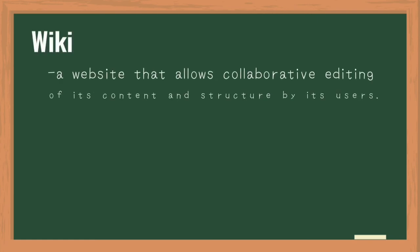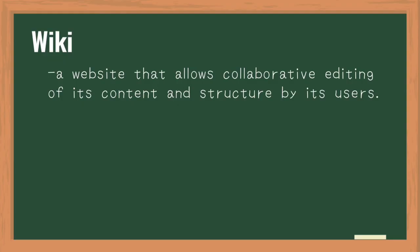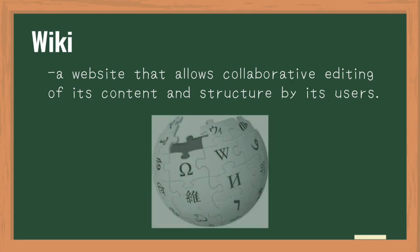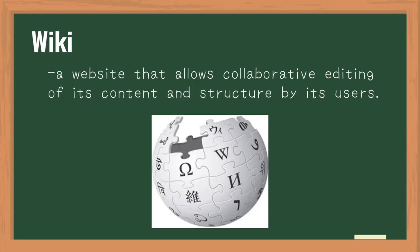A wiki is a website that allows collaborative editing of its content and structure by its users. A typical wiki contains multiple pages for the subject or scope of the project and could be either open to the public or limited to use within an organization for maintaining its internal knowledge base.